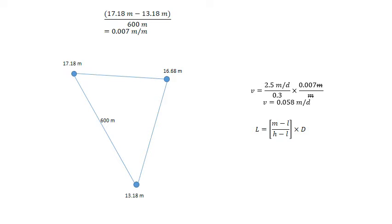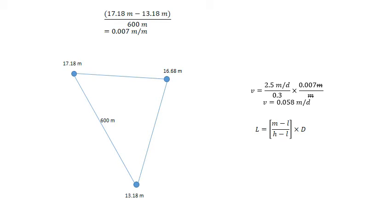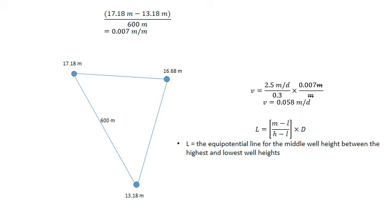To work out the flow direction we need to find where the middle well height comes across. It's like a contour line — it's called an equipotential line of the middle well height. To do that we need to use this equation, where L is the equipotential line for the middle well height between the highest and lowest well heights.